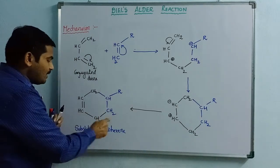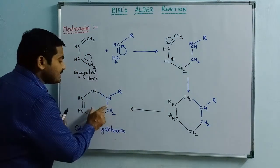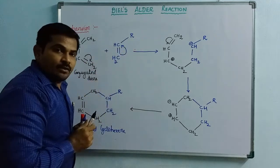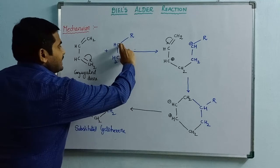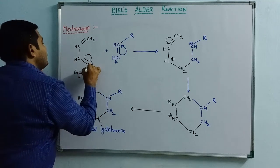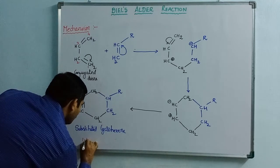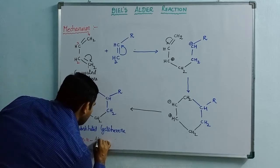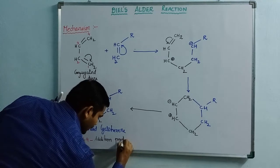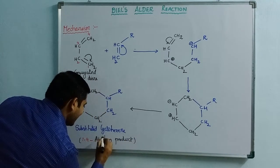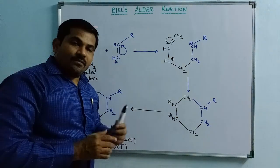This cyclic adduct is the unsaturated form of cyclohexane — that is, cyclohexene — substituted with a radical from the substituted alkene. This is the Diels-Alder reaction. The alkene is added at the first and fourth carbon atoms of the conjugated diene, hence it is called a 1,4-addition reaction. The product is called a 1,4-addition product, also referred to as a 1,4-adduct or simply an adduct. With this, the mechanism of the Diels-Alder reaction is finished.